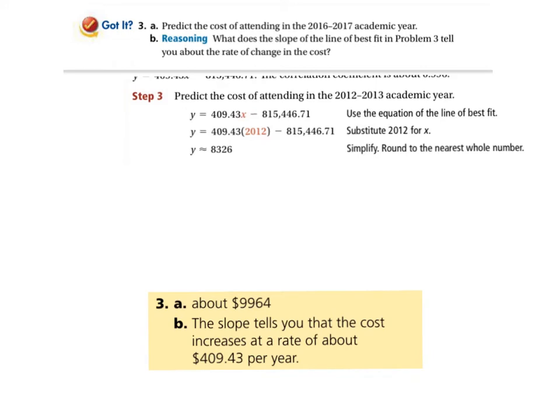So, now we come back to the line of best fit idea. And, again, here's the equation they came up with in the last one using their calculators. Predict the cost of attending 2016-2017. So, we have to plug in here the year. So, plug in the year right here, so where that X is. And, you know, run the numbers. You're going to get 9,964. Now, the big question is here, what does the slope tell us about the rate of change? The slope tells you that the cost increases at a rate of about $409.43 per year. There we go. That's better. I finally got it out. So, that's what the slope's telling in this case. So, you can expect every year it's going to go up by $409.43. About that, because, again, it's an estimate. It's a line of best fit.